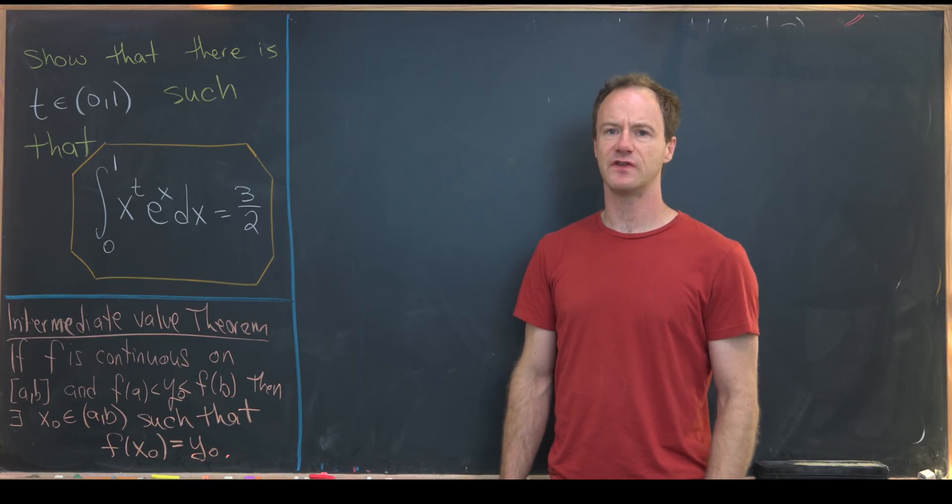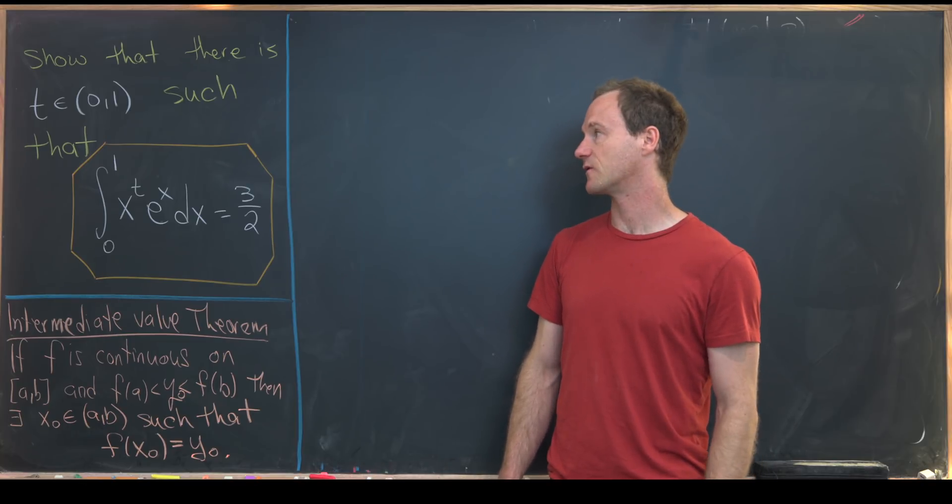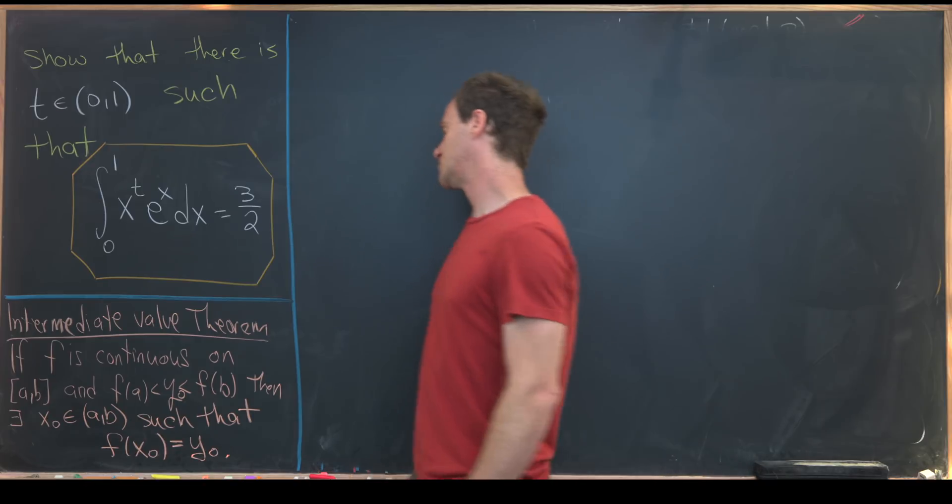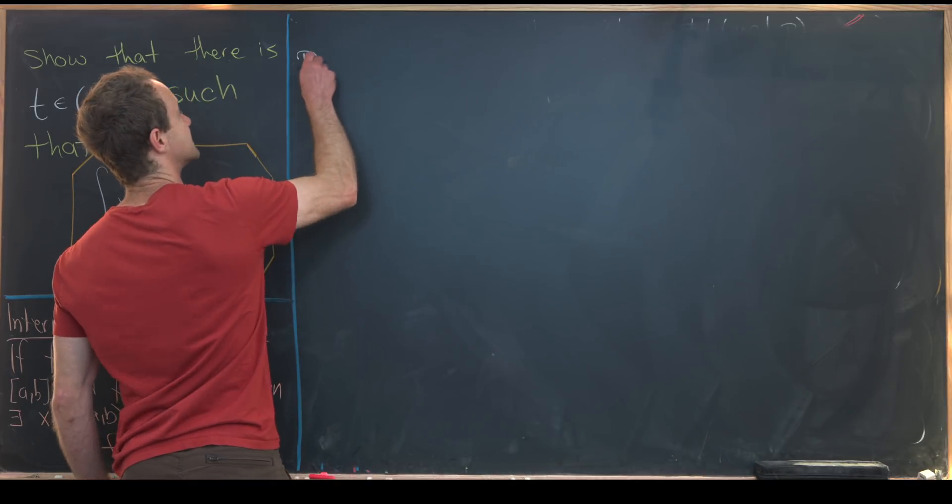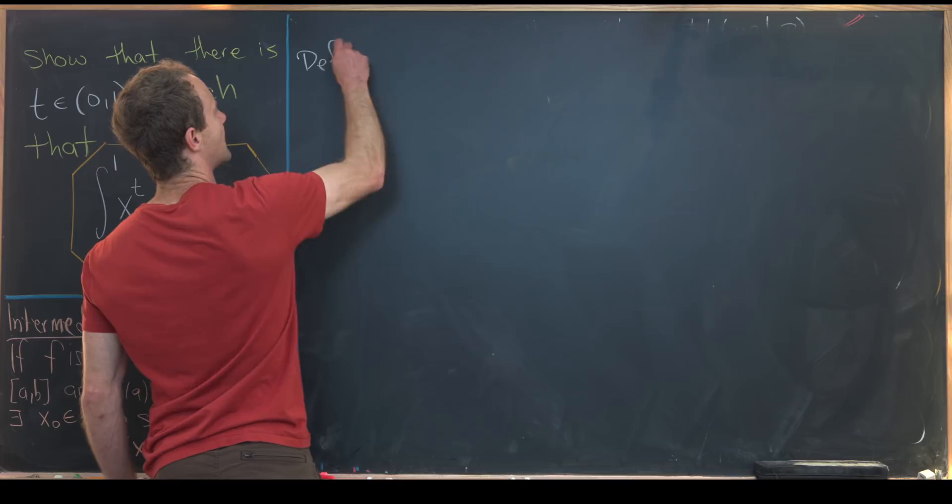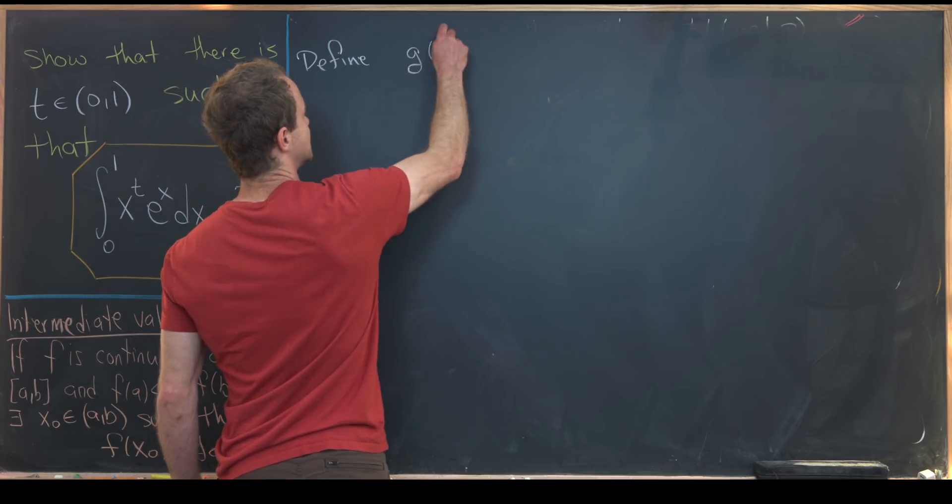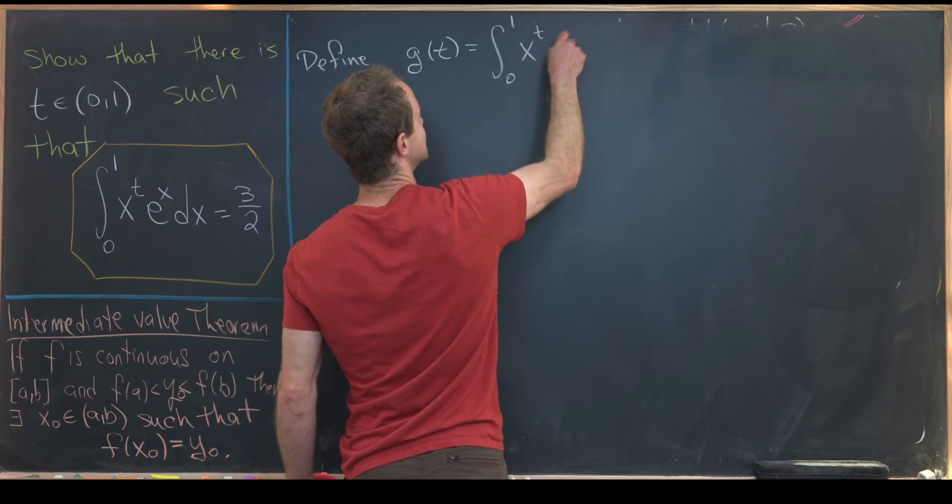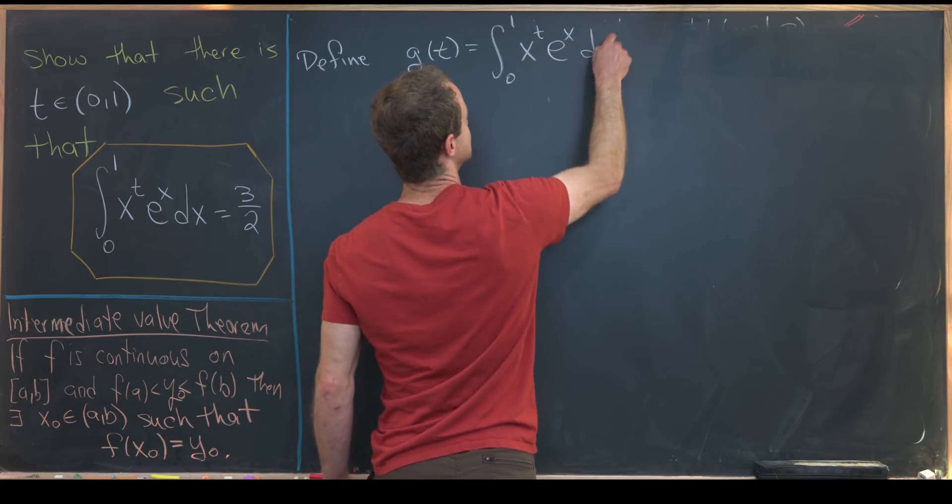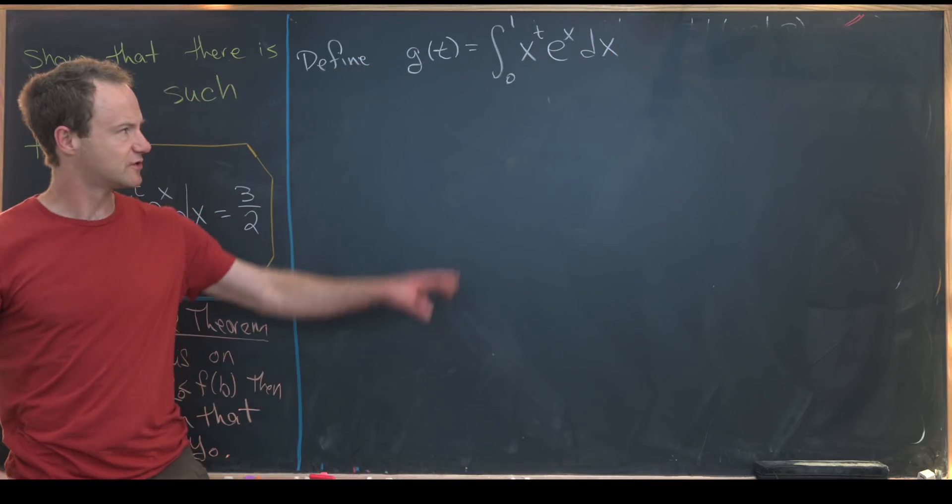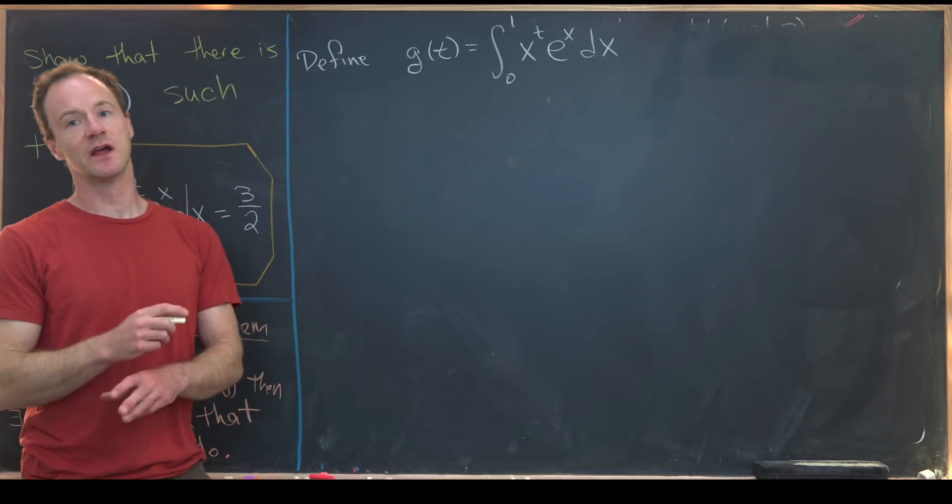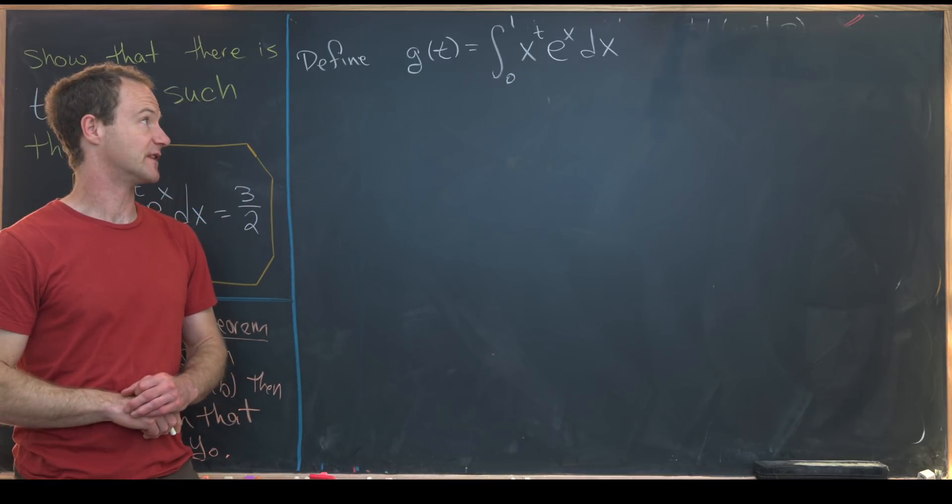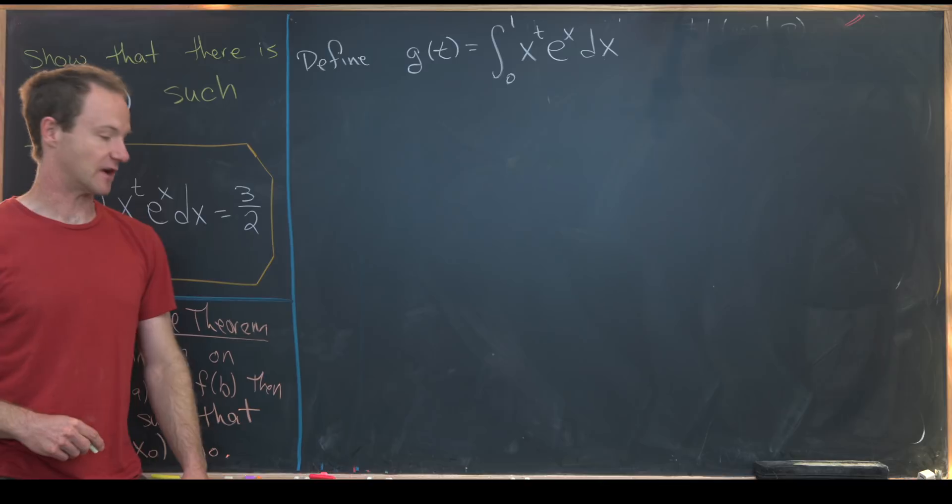So looking at this intermediate value theorem, that really gives us a good hint of where to start here. We should probably define some sort of function, and I'm going to call that function g of t to be the integral from zero to one of x to the t e to the x dx. So notice after taking the integral here, that's no longer a function of x. t is the only variable.